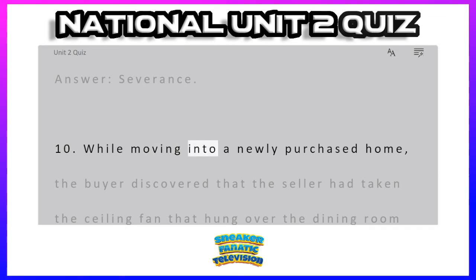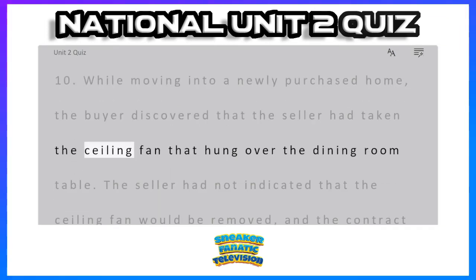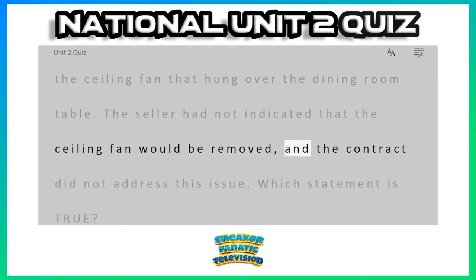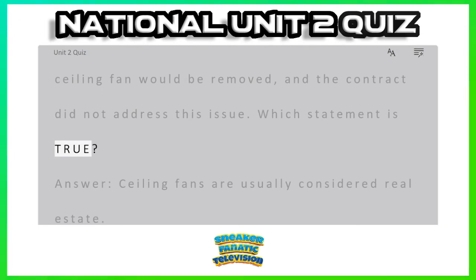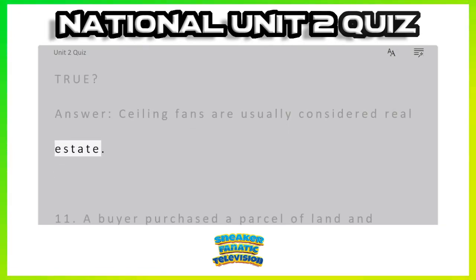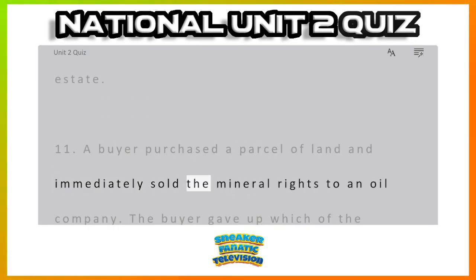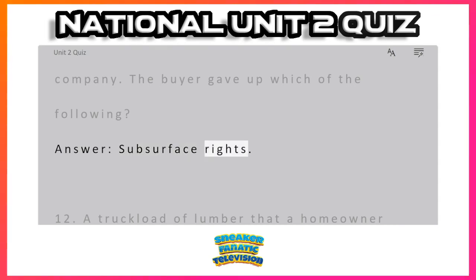Question 10: While moving into a newly purchased home, the buyer discovered that the seller had taken the ceiling fan that hung over the dining room table. The seller had not indicated that the ceiling fan would be removed, and the contract did not address this issue. Which statement is true? Answer: ceiling fans are usually considered real estate. Question 11: A buyer purchased a parcel of land and immediately sold the mineral rights to an oil company. The buyer gave up which of the following? Answer: subsurface rights.